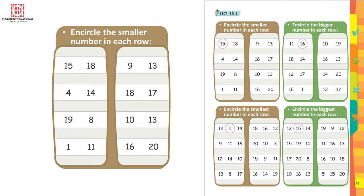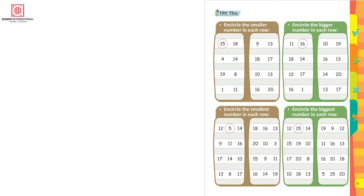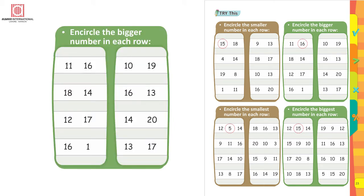Now you can do it yourself. Move on to the next. Here you have to encircle the bigger number. 11 and 16 — which one is bigger? The first one has been done for you. Of course, 16 is bigger than 11. Next, 18 and 14 — which one is bigger?